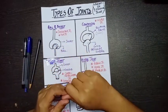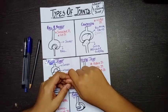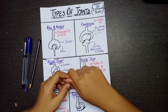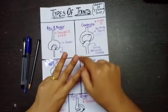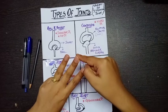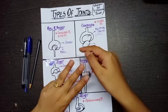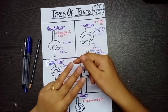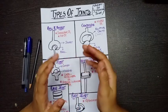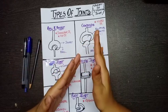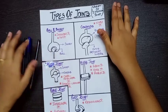Hi everyone, welcome to my channel. Today this video is going to be about the types of joints in the human body. We would be focusing mostly on the synovial type of joint. First of all, you need to know there are three types of joints present in the human body: fibrous joint, cartilaginous joint, and synovial joint. We would be focusing on the third one, synovial joint, because most joints are categorized into synovial joints.